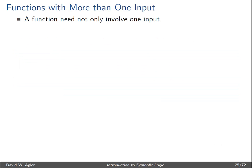One thing to keep in mind is that a function need not only have one input — we can have a set or group of inputs. But what's important is that the set or collection of inputs is related to one and only one output. A function can have two, three, or any number of inputs, but this collection can only be related to one and only one output.